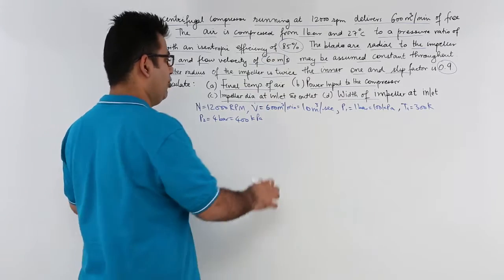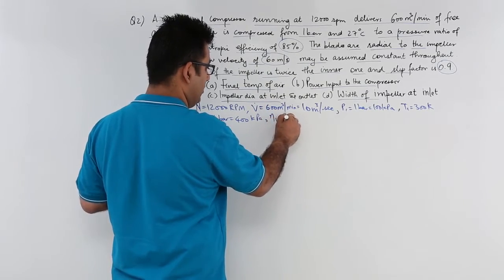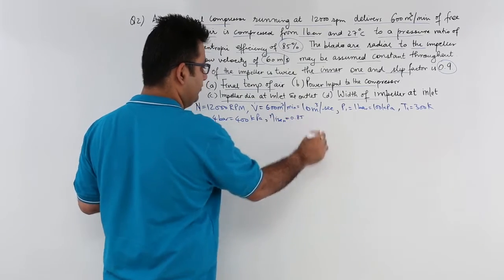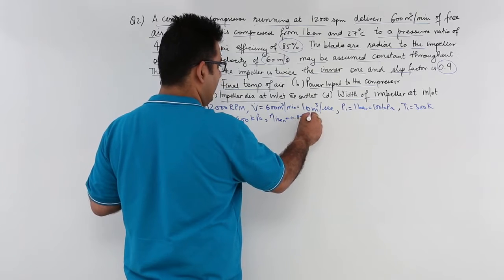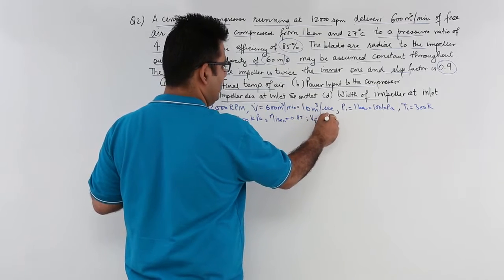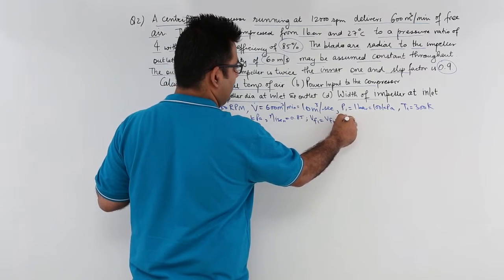The isentropic efficiency is 0.85. The flow velocity is constant. So VF1 is equal to VF2 which is equal to 60.